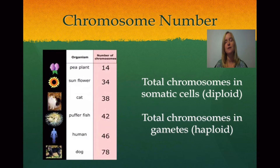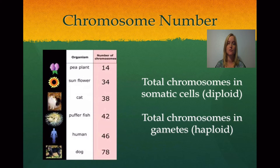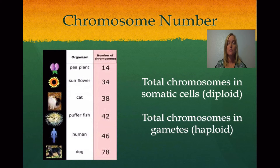Now we're going to talk about chromosome numbers. In organisms, the total chromosomes in the somatic cells is diploid — basically two sets of chromosomes. In the gametes, it's haploid — one set of chromosomes. In a human, we have 46 chromosomes in our somatic cells and 23 chromosomes in our gametes.